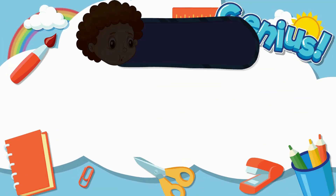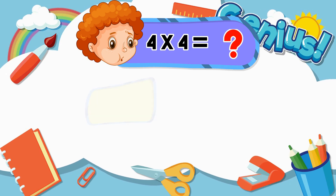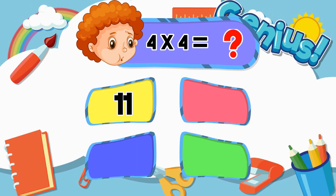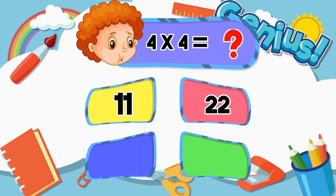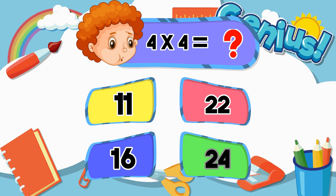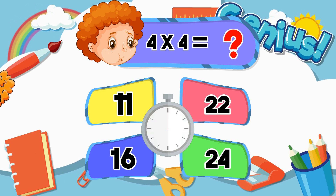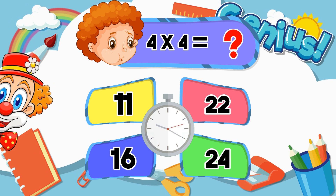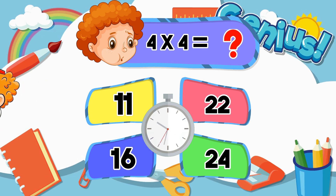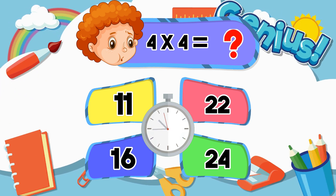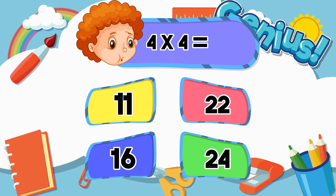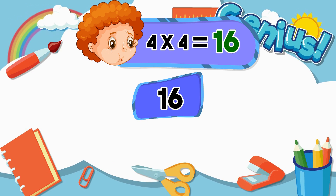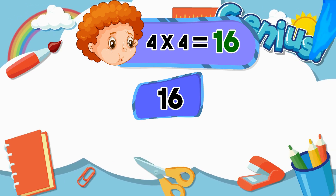What is 4 times 4? Options: 11, 22, 16, 24. Answer: 16.